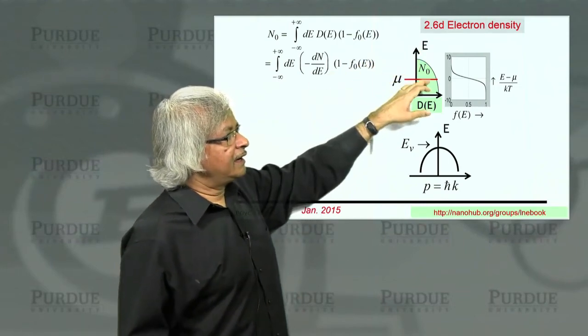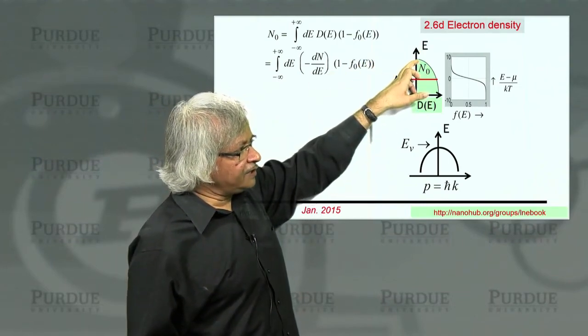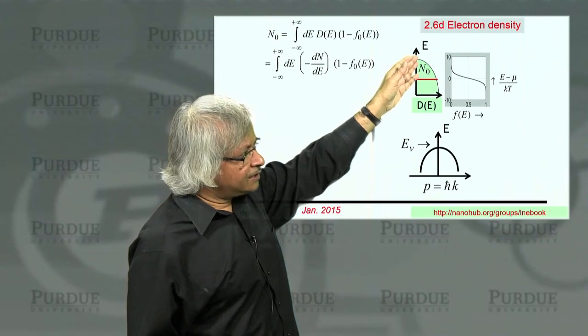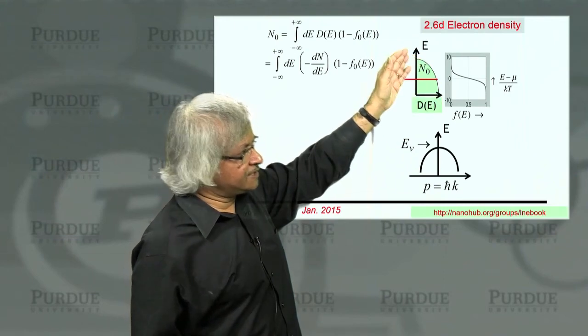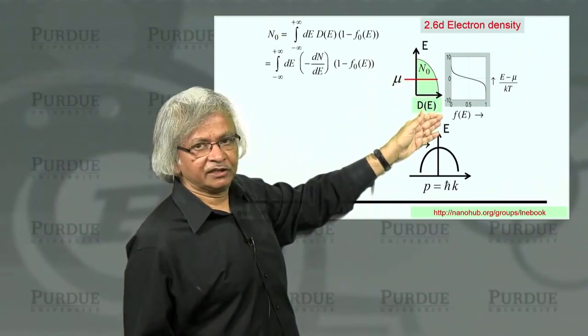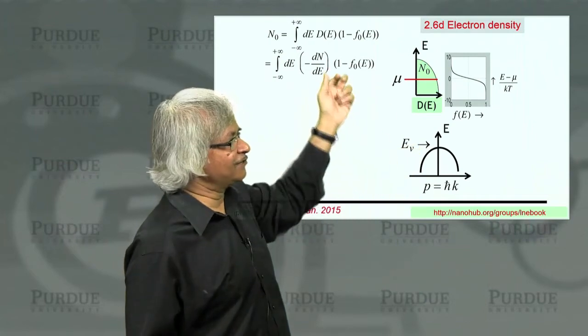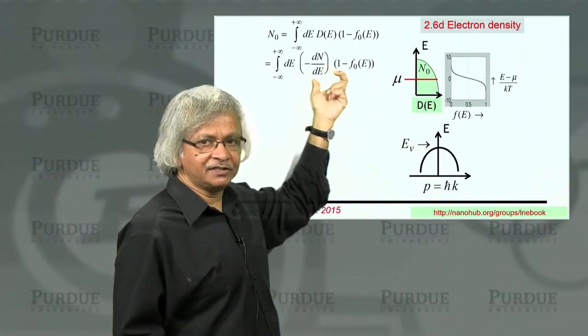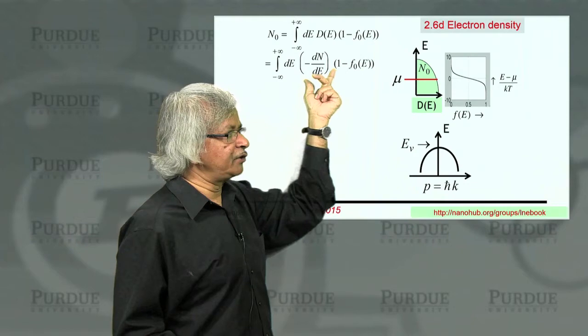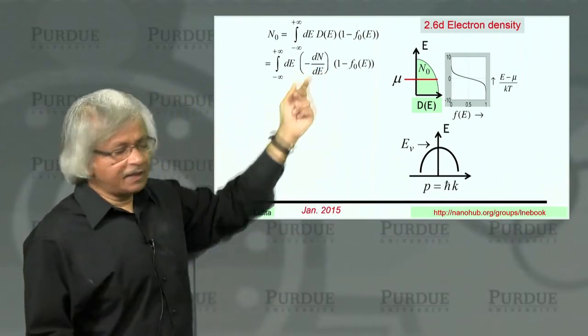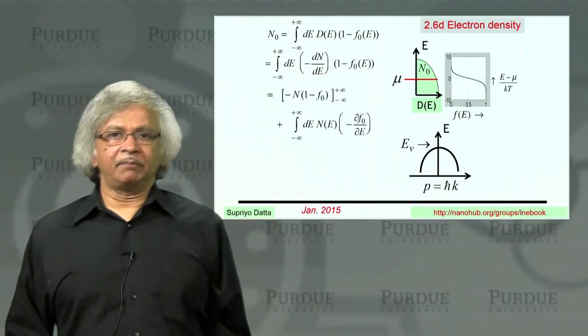So you have an N of E that is actually increasing as you go down in energy. What that means is density of states is kind of like the negative of its derivative. So that's why I wrote a minus dN dE. And now you can do this integration by parts again.